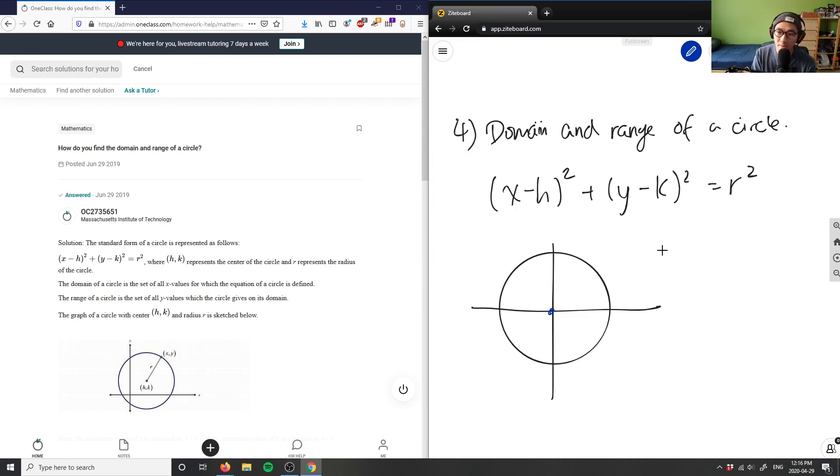And then k is zero, so h, k is (0,0), which means here this radius here is simply just r here. And what we're doing here is we're talking about the domain and range of a circle.